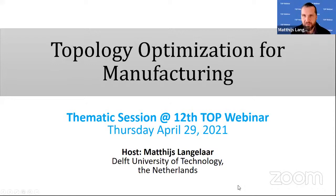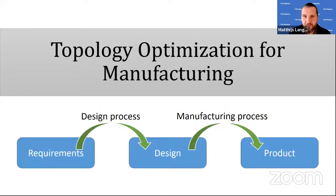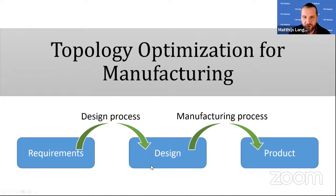This is a thematic edition of the TOP webinar, focusing on topology optimization for manufacturing. To explain what we mean, let me talk about a generic product development process. Typically you start with some requirements, then through a design process — in our case topology optimization — you end up with a design, which with a chosen manufacturing process can be turned into a physical product.